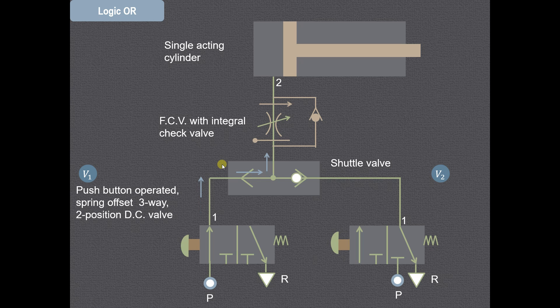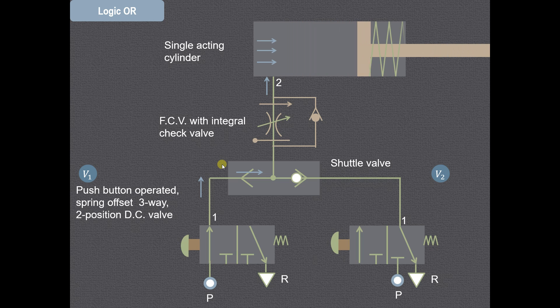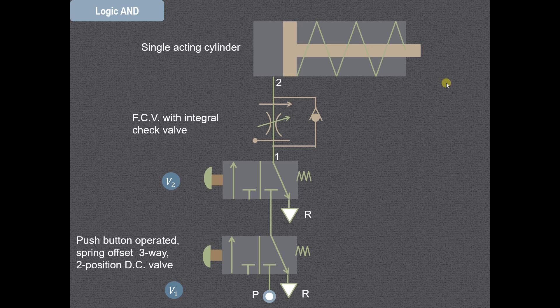Now when valve V1 is operated, the operation will take place in the same fashion. V1 or V2 — and therefore it is known as the logic OR circuit. Now we will see the operation of the logic AND circuit.